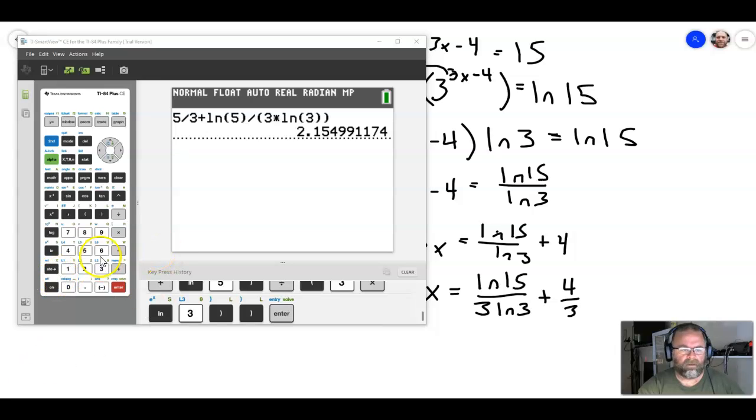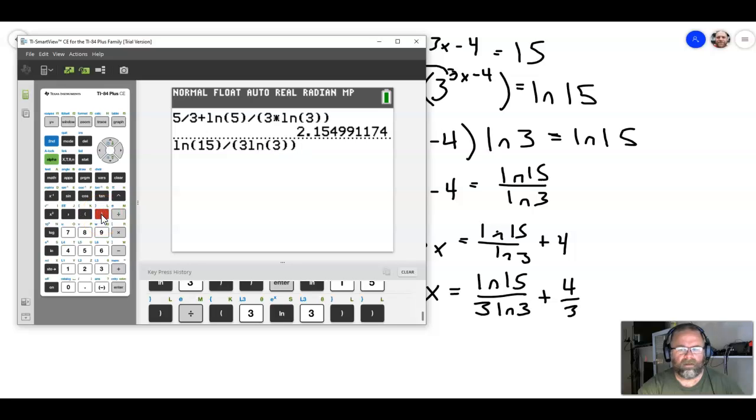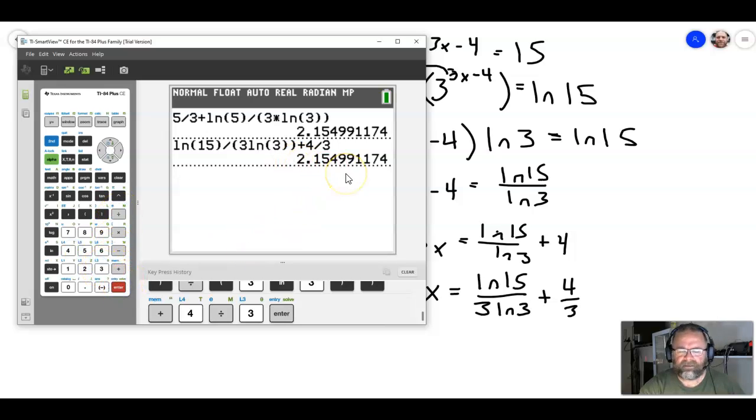Give me just a second. Alright, this is natural log of 15, divided by 3 natural log of 3, plus 4 thirds. Plus 4 thirds. And we get the exact same decimal approximation, which means that this is equivalent, or just as good an answer as the other one.